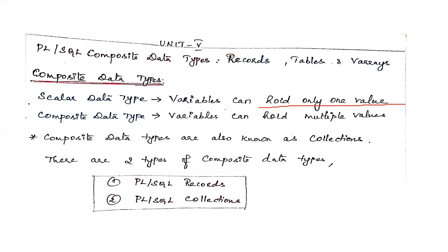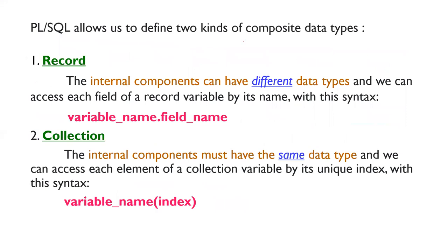In the scalar data type, it can hold only one value. The composite data type can hold multiple values. The composite data type is also called collections. PL/SQL allows you to define two kinds of composite data types: records and collections.